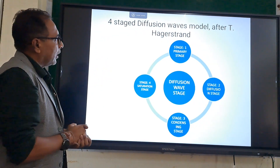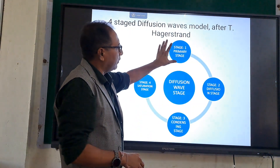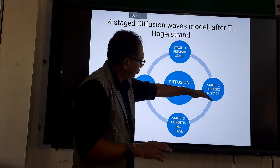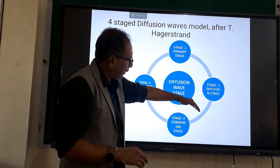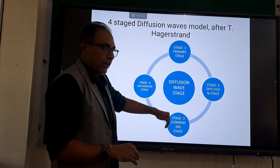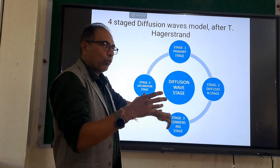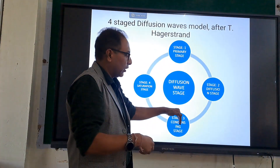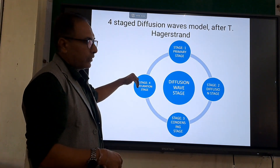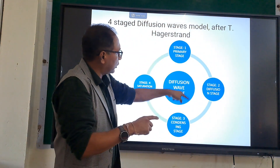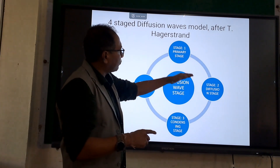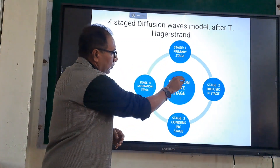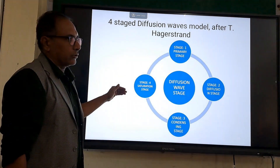As a model, diffusion wave has four stages. The primary stage is where diffusion will start initially. Then the diffusion stage, which follows the primary stage. Then the condensing stage, where diffusion slows down — this happens when the acceptor will no longer accept the idea, material, or whatever is being diffused. And finally the saturation stage, after which there will be no diffusion. These are the sequences — the waves or various stages of diffusion as identified by Hagerstrand: primary, diffusion stage, condensing stage, and saturation stage.